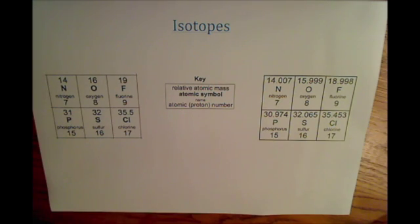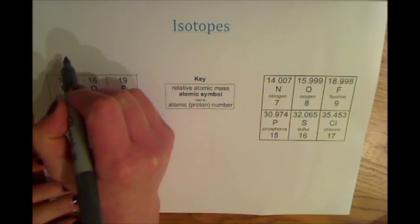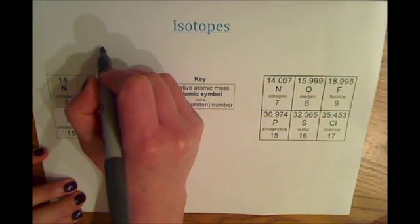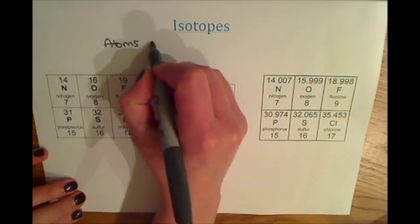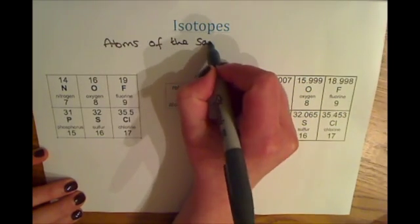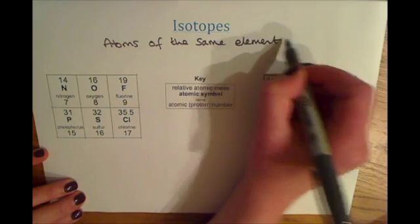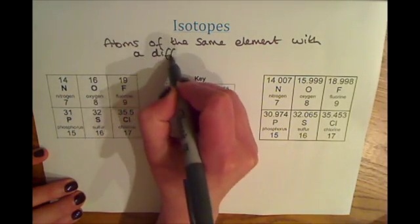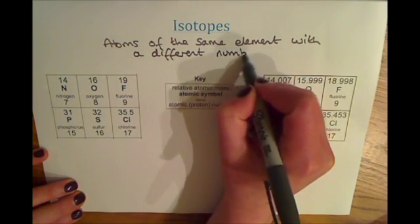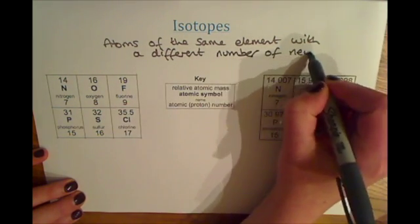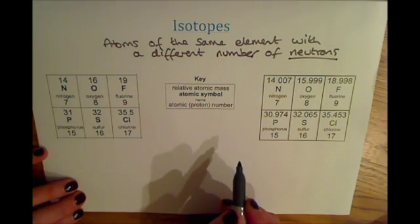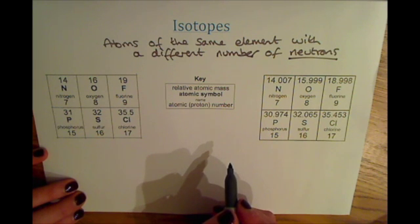This video is about isotopes. Isotopes are atoms of the same element with different numbers of neutrons. I'll just write the definition down here so we can come back to it: atoms of the same element with a different number of neutrons.